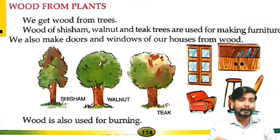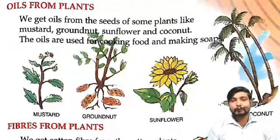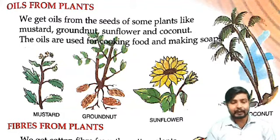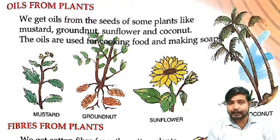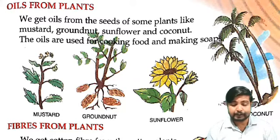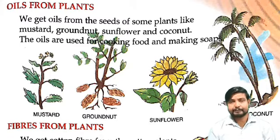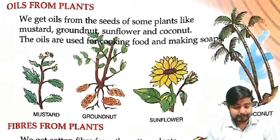Then wood is also used for burning. Gaon mein log usko khaana pakane ke liye bhi wood ka use karte hain. Then oil from plants. Hum jo cook karte hain food, wahan pe jis oil ka istemal karte hain, woh oil bhi ek plant se hi aata hai. We get oil from the seeds of some plants like mustard, groundnut, sunflower, and coconut. The oil is used for cooking food and making soaps.